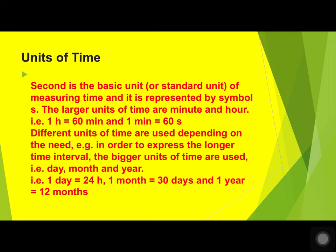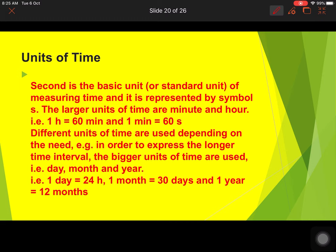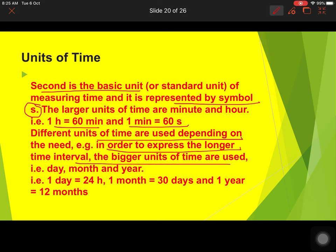The standard unit of time is the second, represented by the symbol 's'. One hour means 60 minutes and one minute means 60 seconds. Larger units of time include day (24 hours), month (30 or 31 days), and year (12 months). One more unit is the light year — the distance traveled by light in one year.